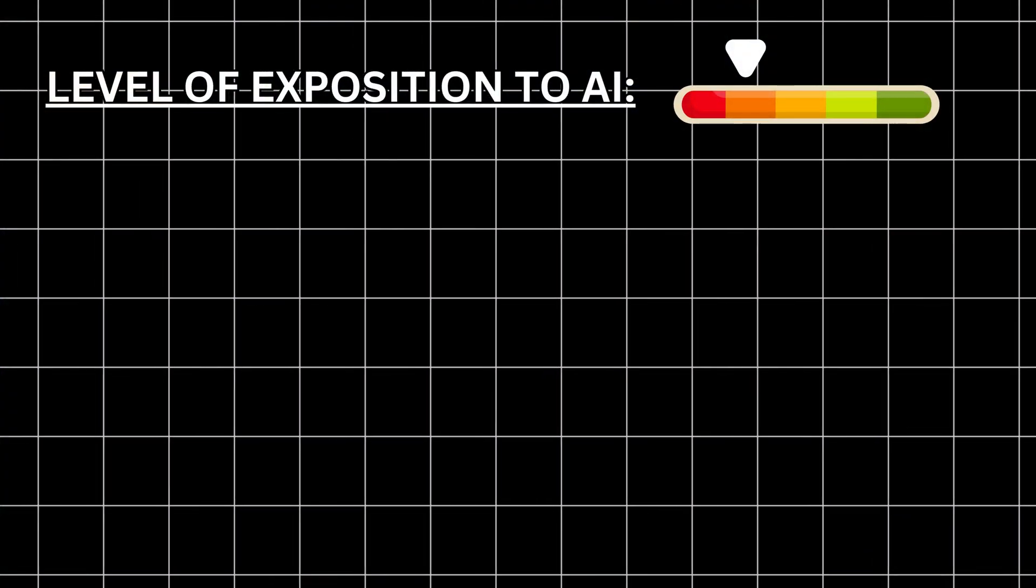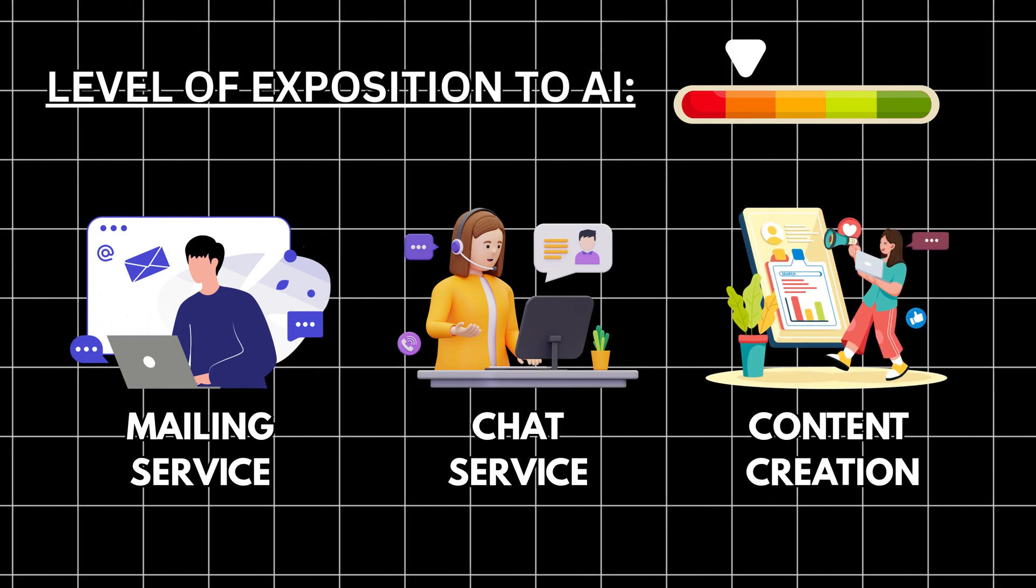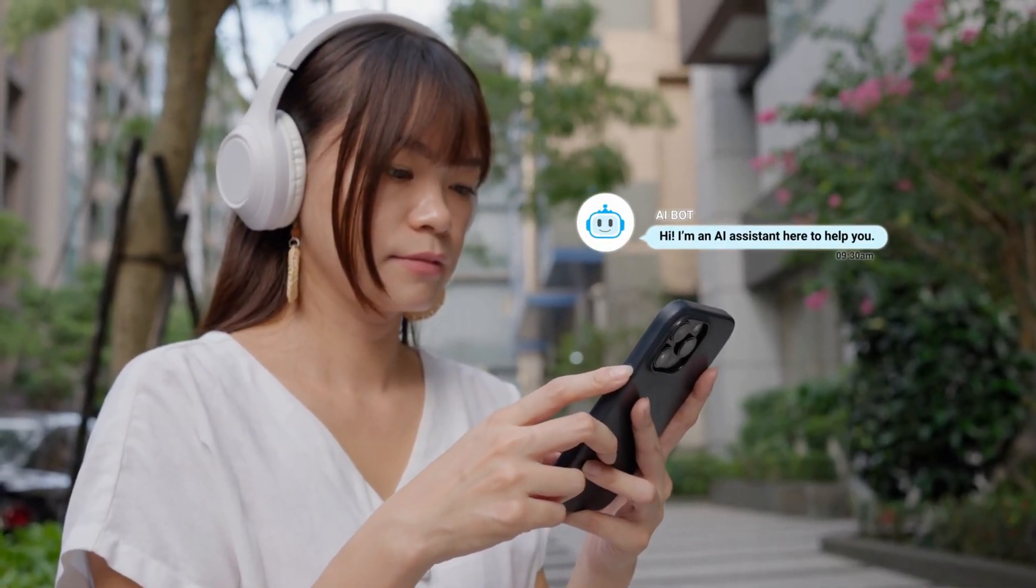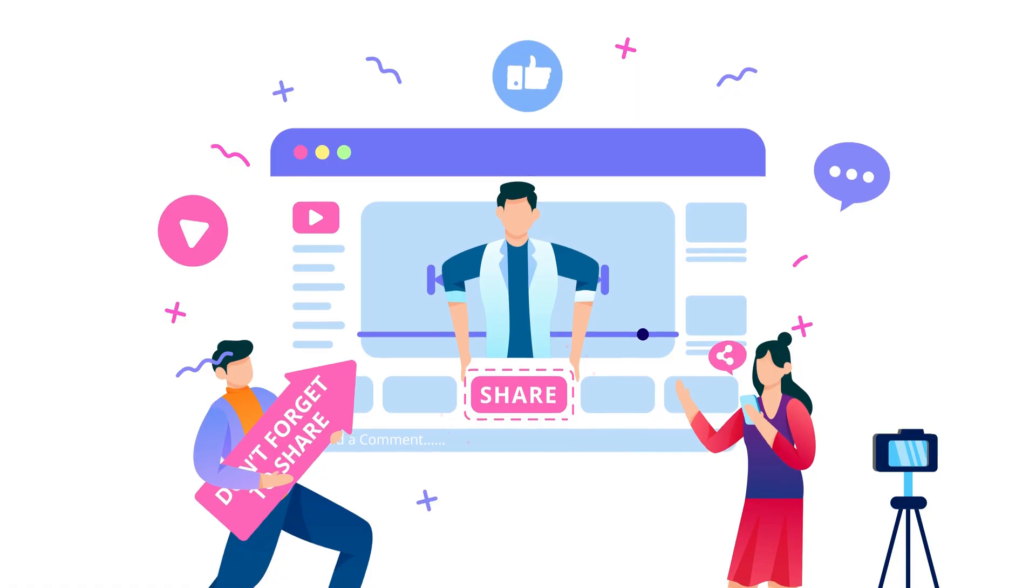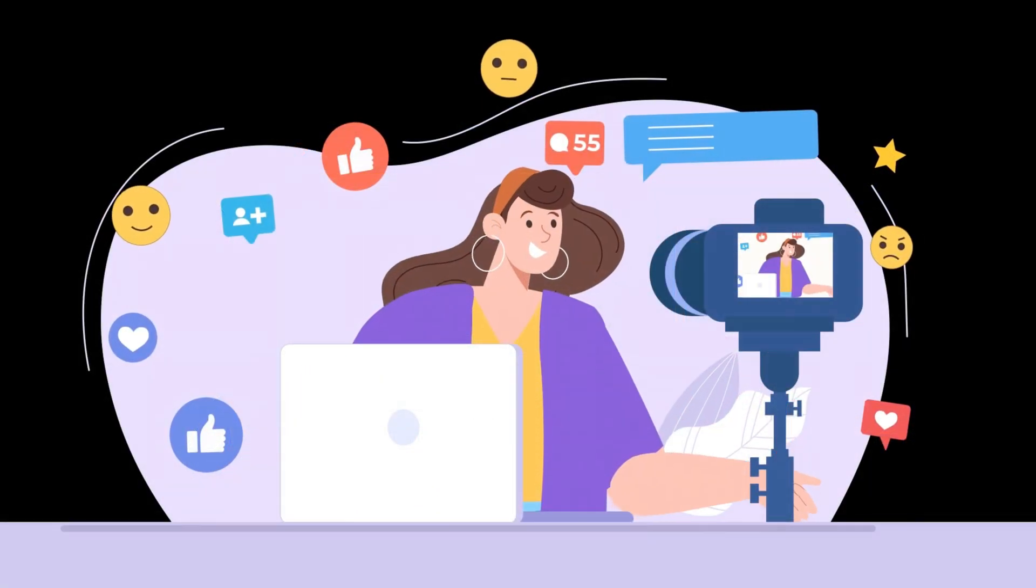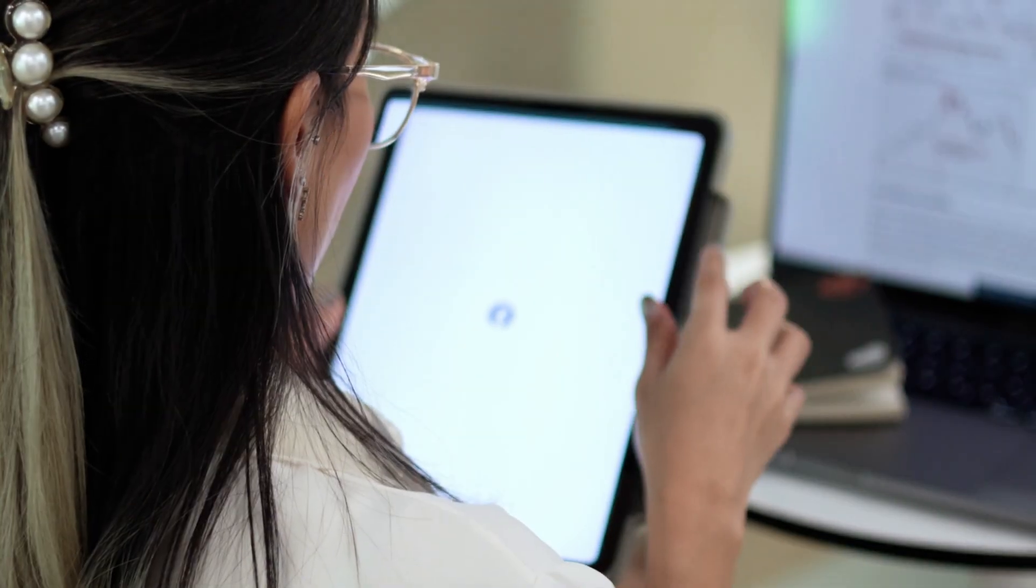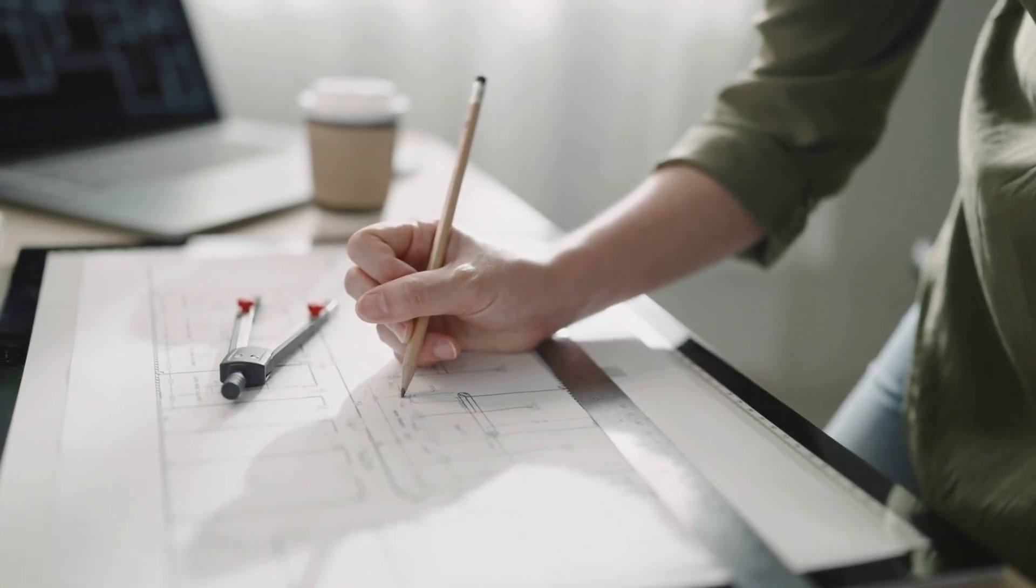Next, text-first roles like email and chat-based customer support, and basic content production. In support, the system can propose a first reply from a knowledge base and suggest next steps. Your value shifts to empathy, tone, unusual cases, and knowing when to break the script. In content, simple product descriptions and short posts often start with AI. Your value is what's true, what fits the brand, and what the audience actually cares about. Editors and fact-checkers rise in importance. High-volume drafters feel pressure.